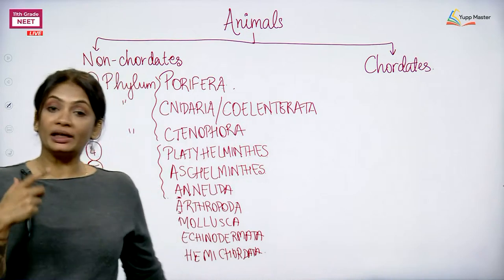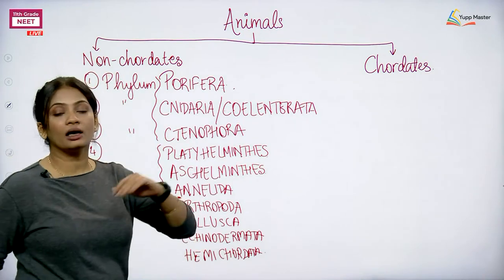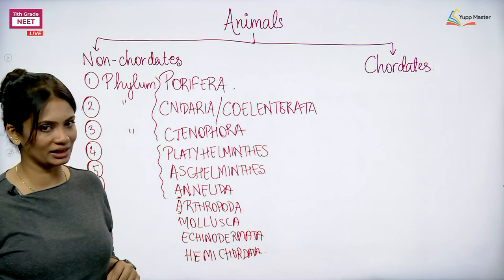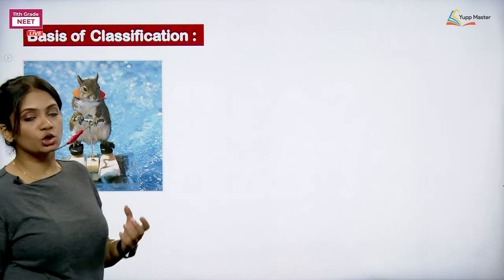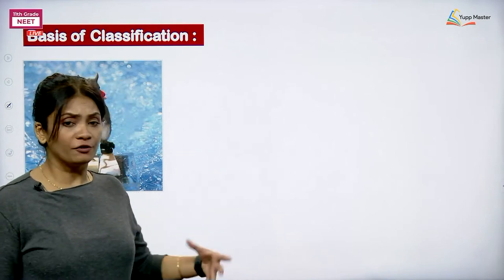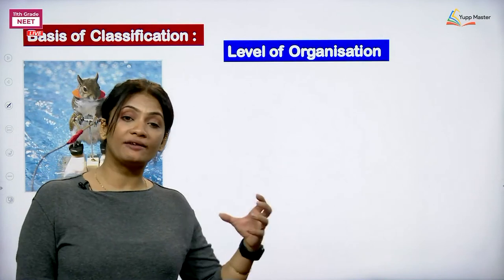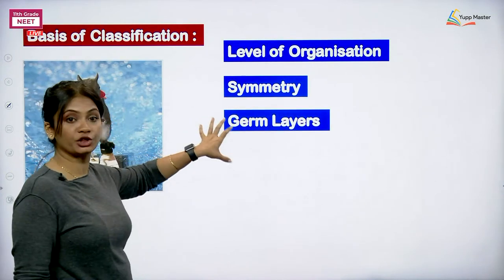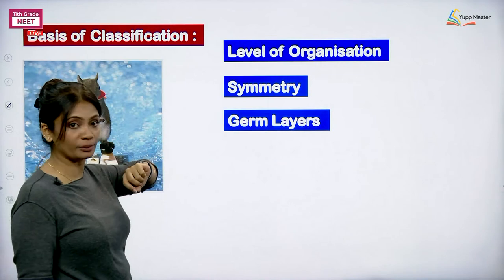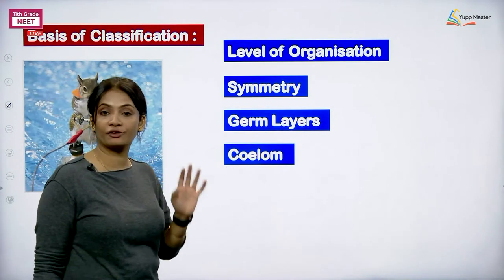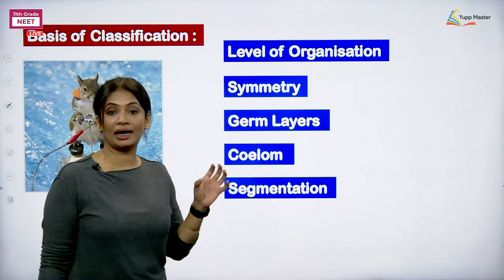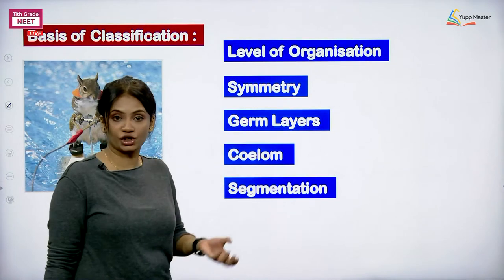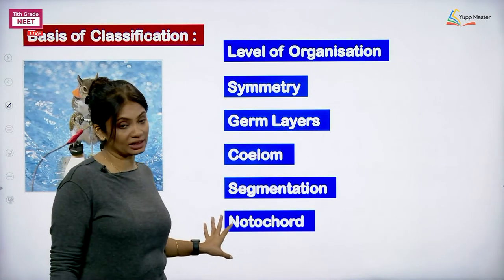Once you know the phylum names, classifying animals and remembering their examples becomes much easier. The basis of classification depends on various parameters: level of organization, symmetry, number of germ layers, coelom (which refers to body cavity), segmentation, and notochord. Let's begin with the first way — the level of organization.